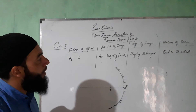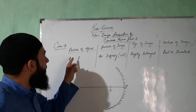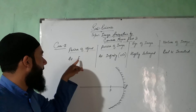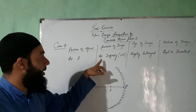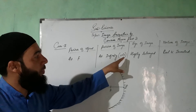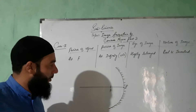So, if the object is at F, then the image will be at infinity. The image will be highly enlarged, real and inverted.